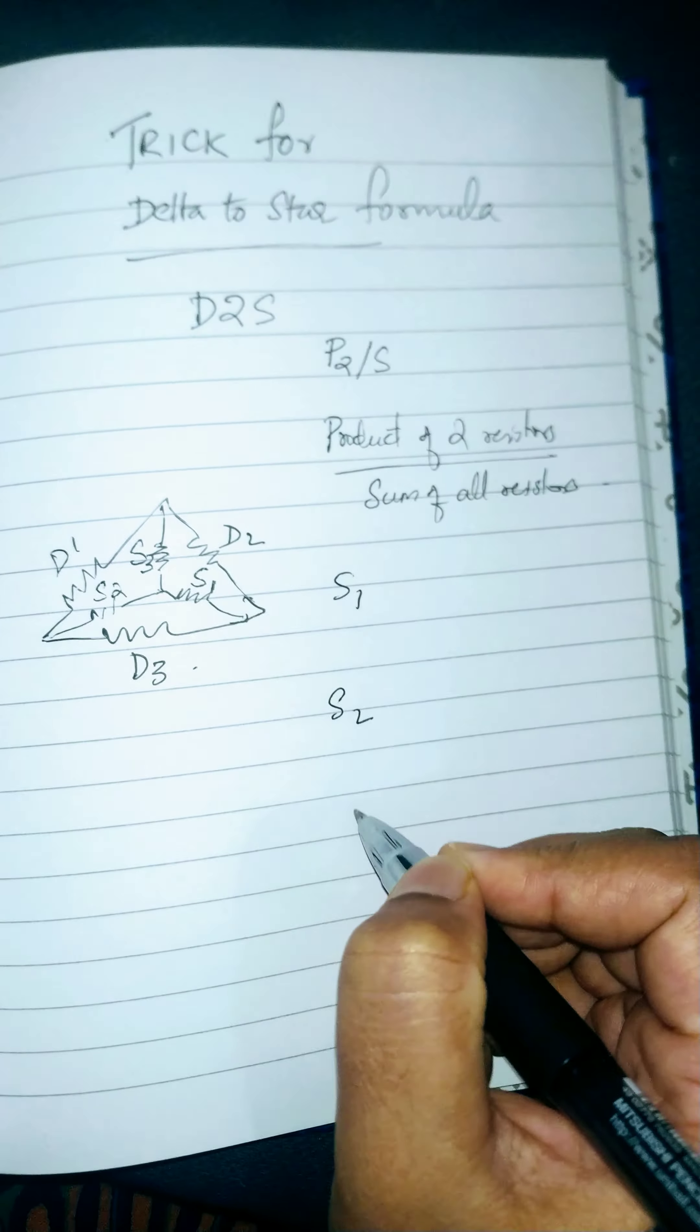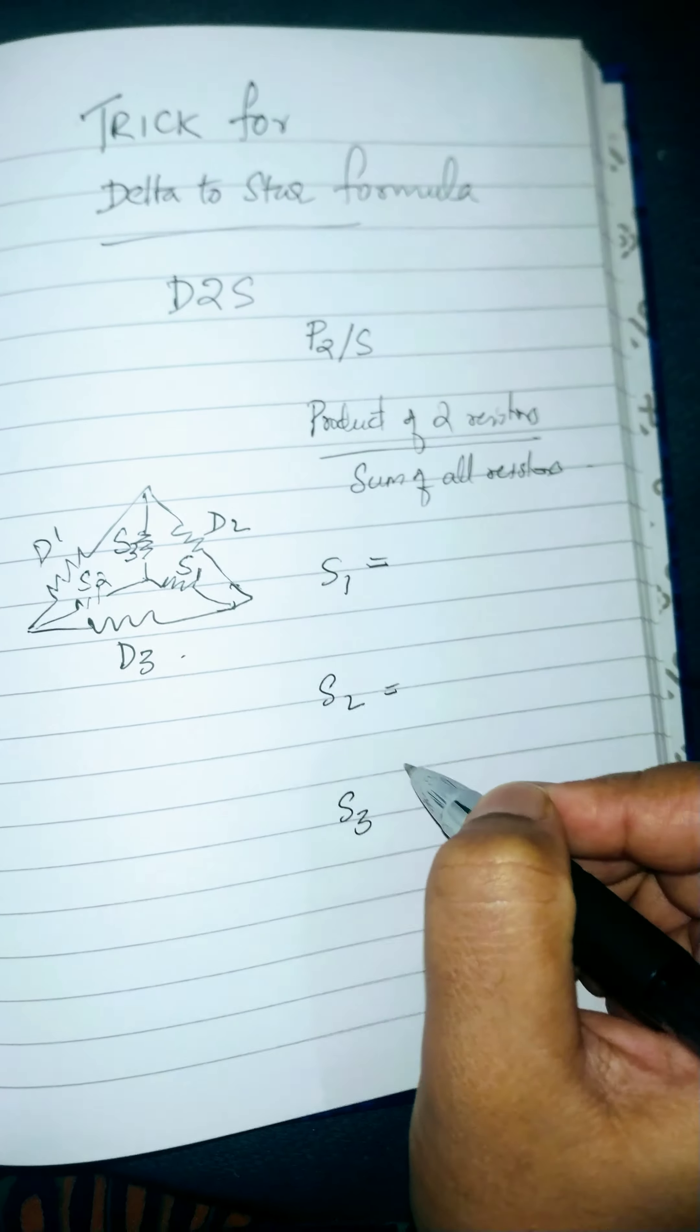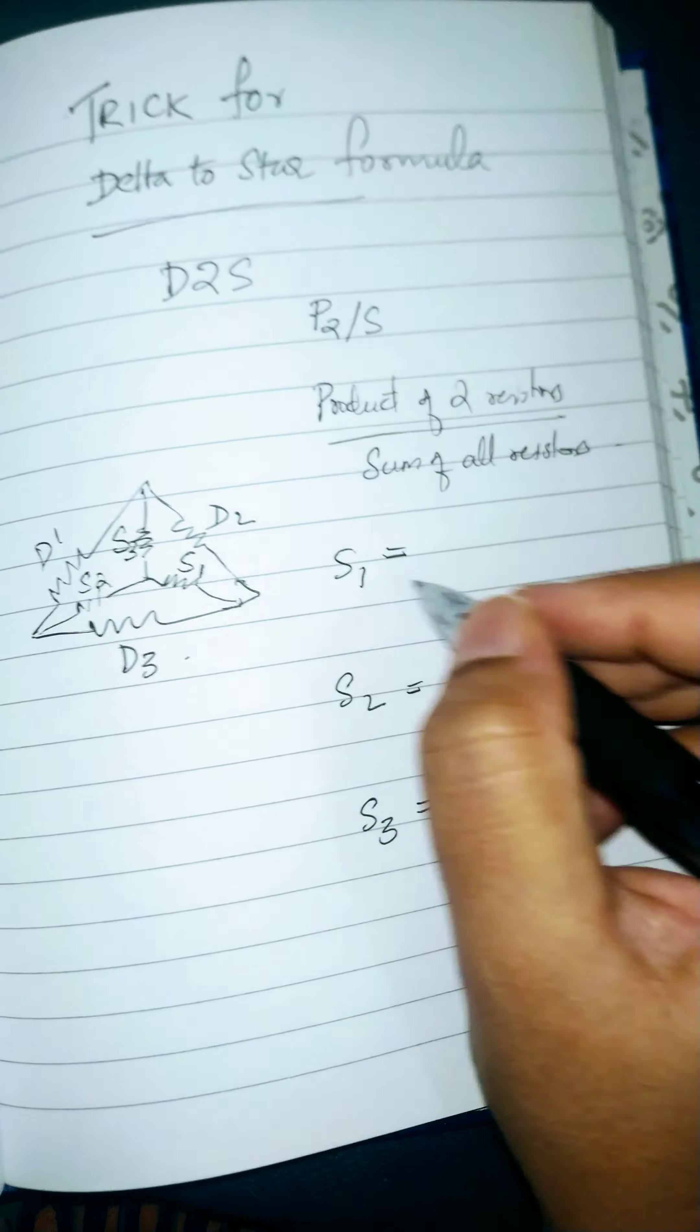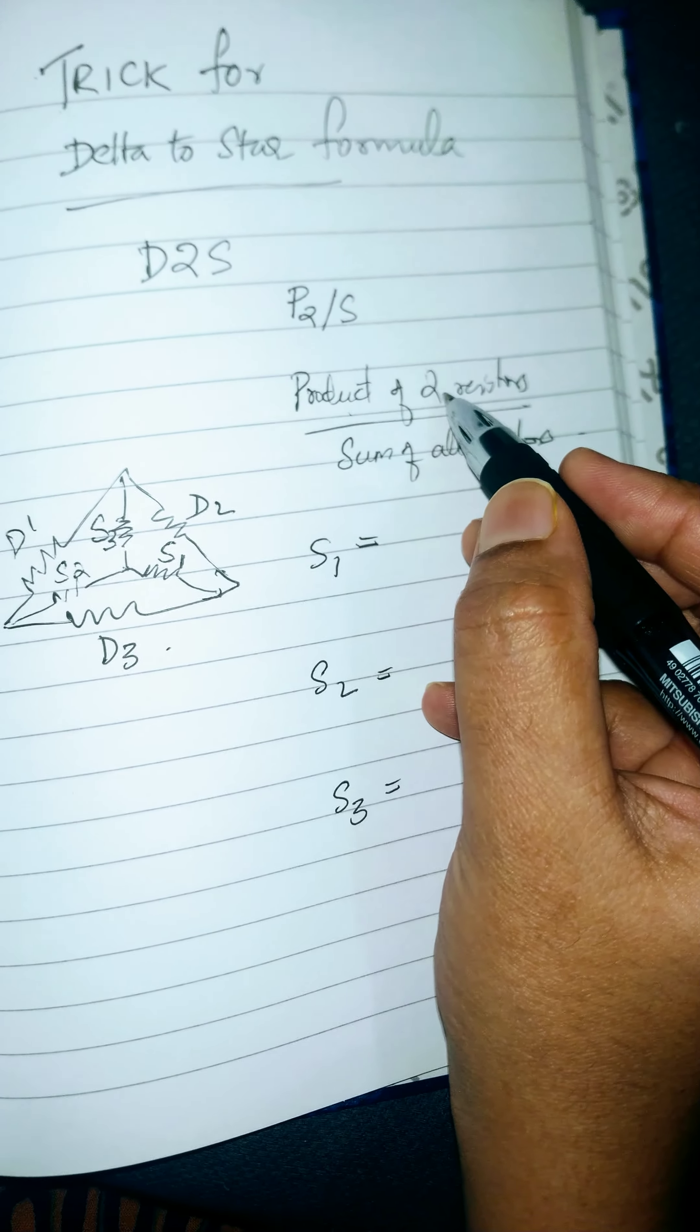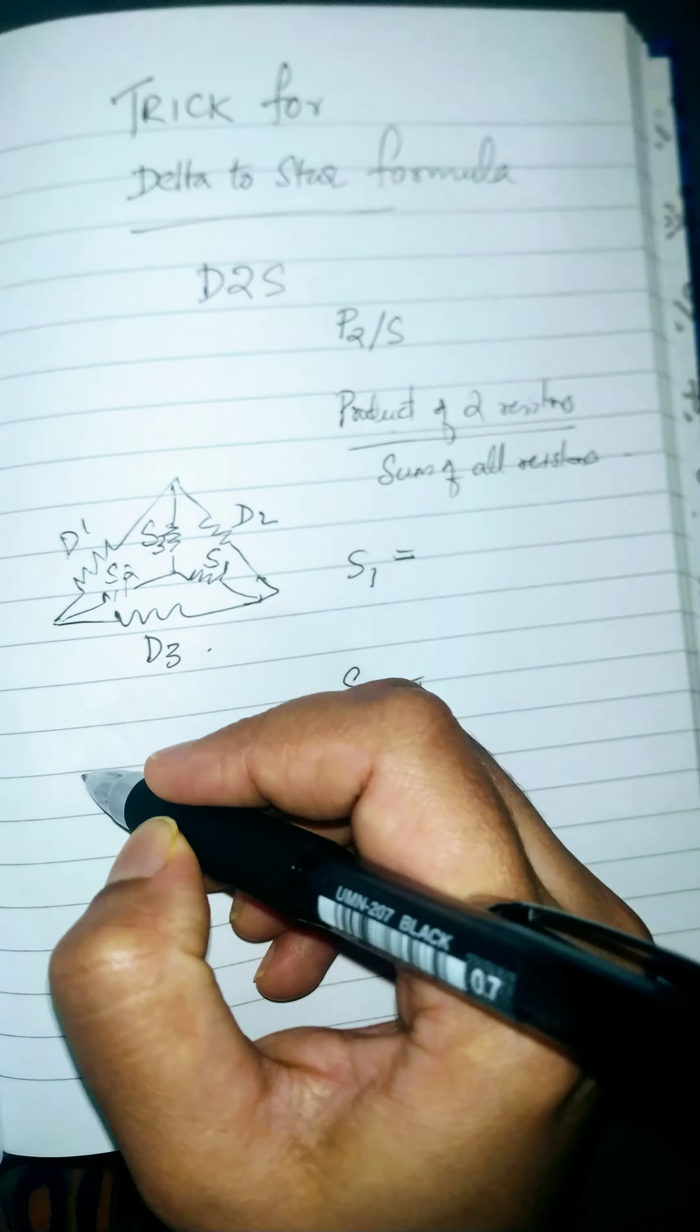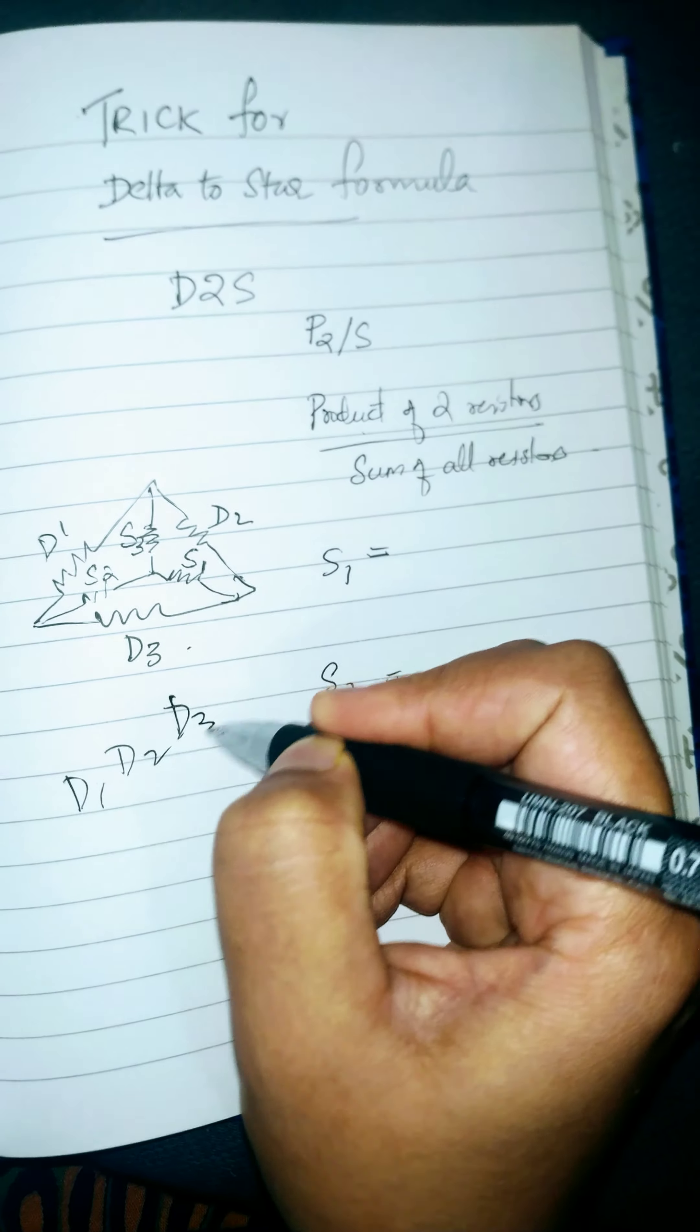Now you need to get the value for S1, S2, and S3. These will be your star connected resistor values. Now S1, the code is product of two resistors. So you need to get the two resistors you are given with - D1, D2, and D3. You have to pick up two resistors here.